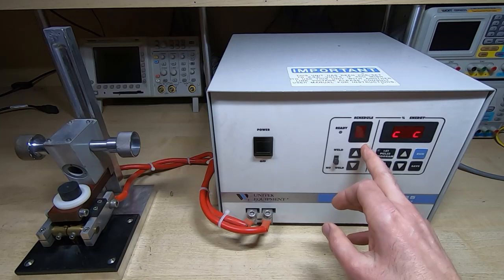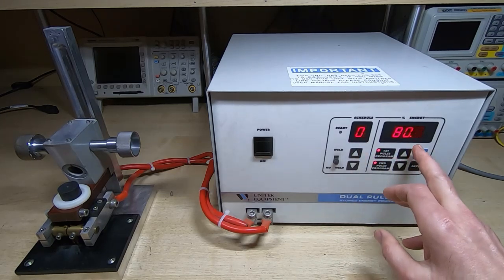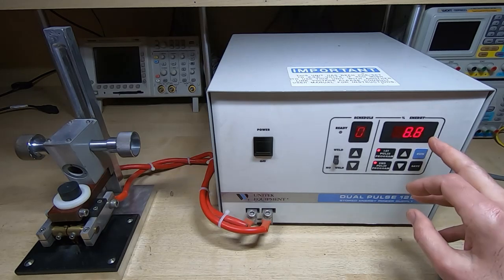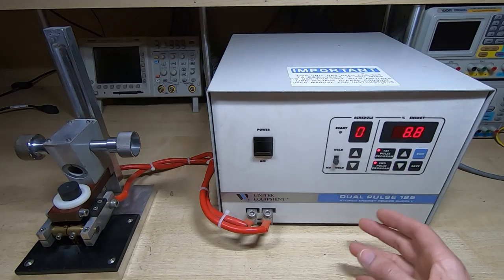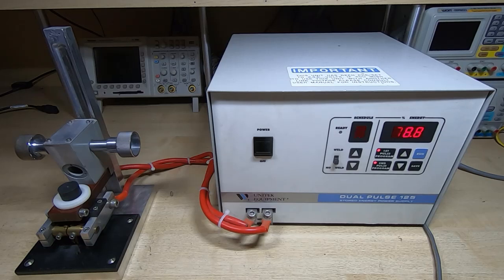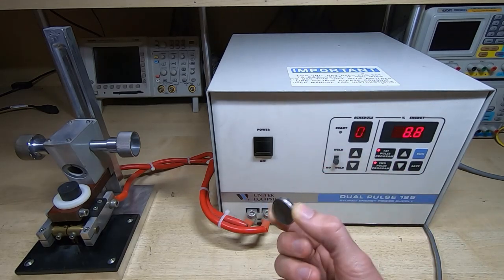As I say, we can store various programs and we can select the two pulses, select the peak energy and the duration of the pulse. We can save that as a program and then obviously we can recall that program as and when we want to. So I'll move the camera across so we can zoom into the fixture and I'll just demonstrate welding a tab onto something like a coin cell.